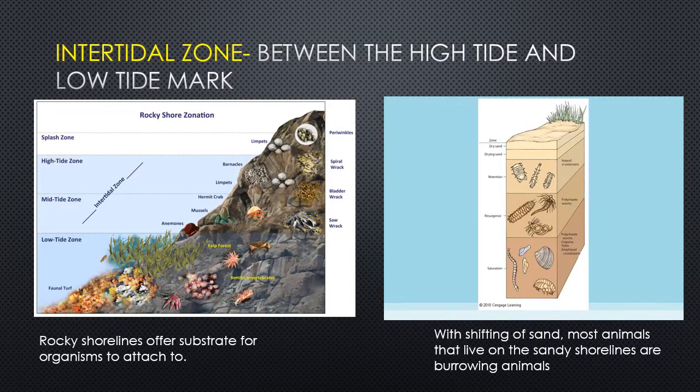The intertidal zone is the area between high tide and low tide mark. There are two types: rocky shorelines, like off San Diego where cliffs meet the ocean, offering substrate for organisms to attach to — you see lots of clams, barnacles, and that sort of thing.